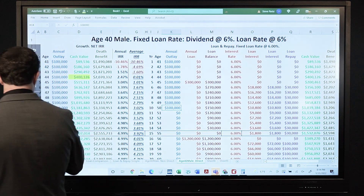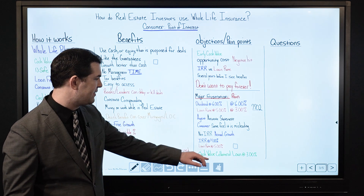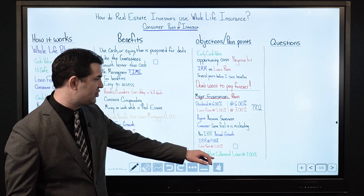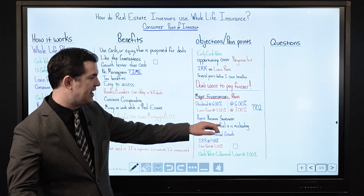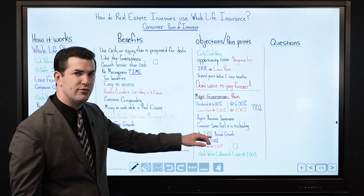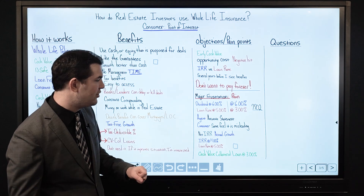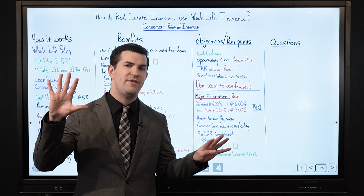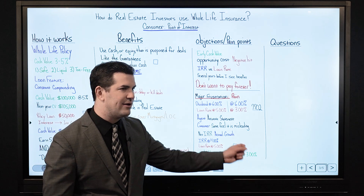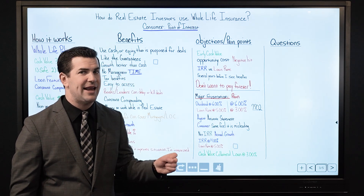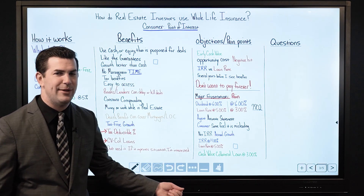Going back to the whiteboard demo — we've got cash value, collateral loans. Consumers feel that the dividend-to-loan-rate statement is misleading. They want to look at the net internal rate of return: what is the actual growth rate compared to the net cost to borrow? So if I have an internal rate of return of 4% and I'm paying 5% to the insurance company, it doesn't really make sense — versus a collateral loan if I can get it at 3%, sometimes lower. Now if I'm earning 4% and paying 3% in loan interest, that makes much more sense.